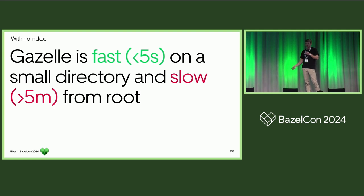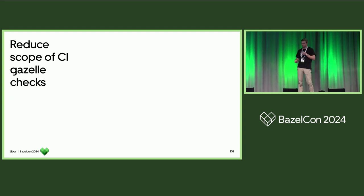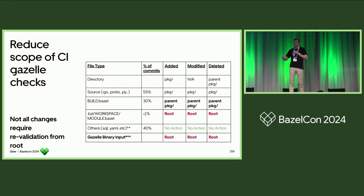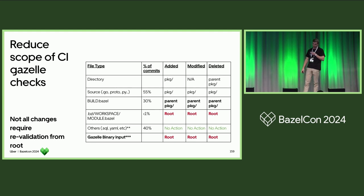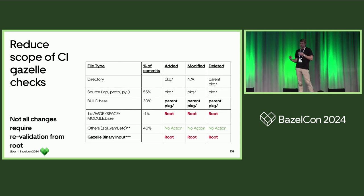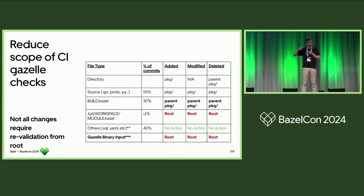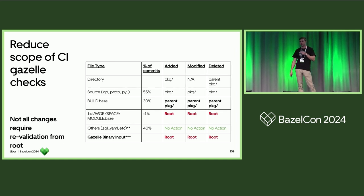This allows us to make our speed operate at the size of the directory we're running Gazelle on, which in most cases can be really small, rather than the size of the repo as a whole. This allows us to disable the index, which is basically a big mapping of import path to target. So now with no index, Gazelle is really fast if you run it on a small directory. But if you run it from root, it still takes like five minutes. We can reduce the scope of CI by running it on much smaller parts of the repo. We noticed 55% of commits only change source code, 30% change build files. In these two cases, we don't need to run from root — we only need to run on at most the parent package of that build file. This means we're saving a ton of time by running those five-second runs rather than five-minute runs. I highly recommend you look at your commits and patterns to see if you can scope down and run Gazelle on a smaller part of your repo.